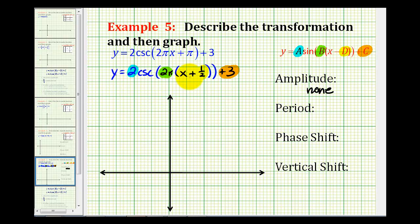The period will be two pi divided by b. Well, two pi divided by b, which is also two pi, is equal to one. So the period is equal to one unit.